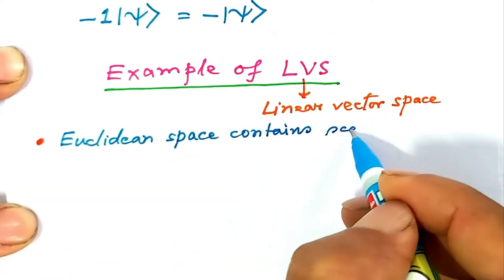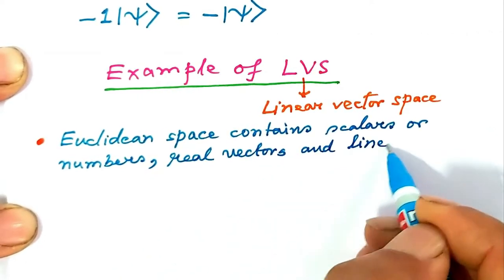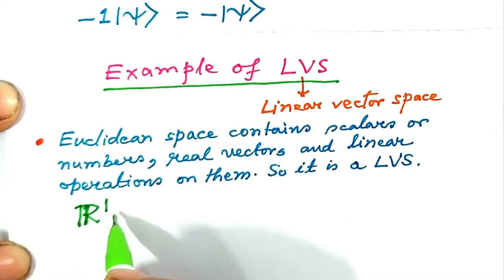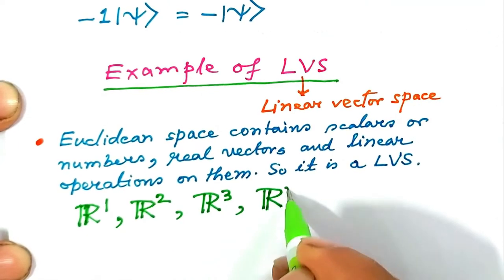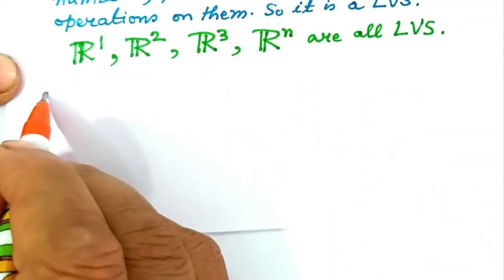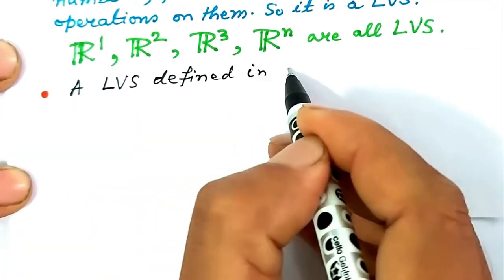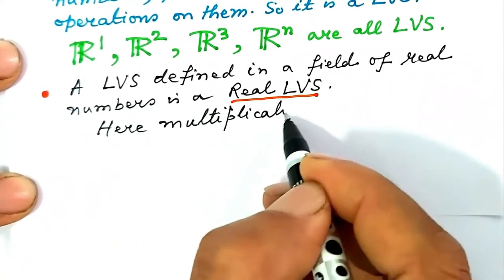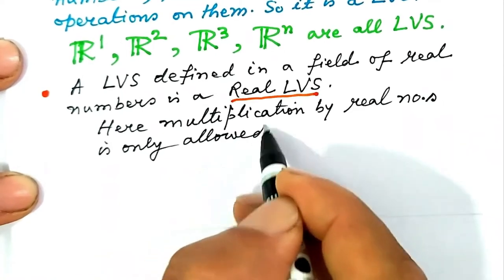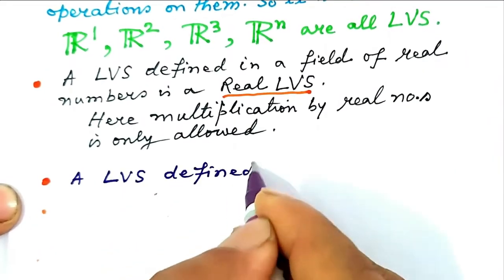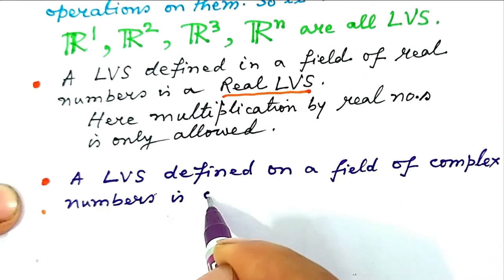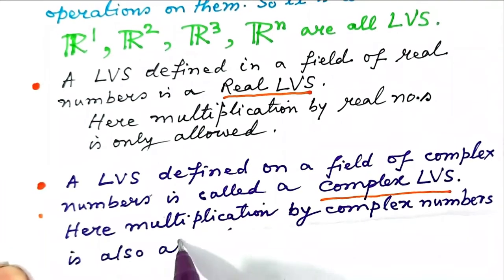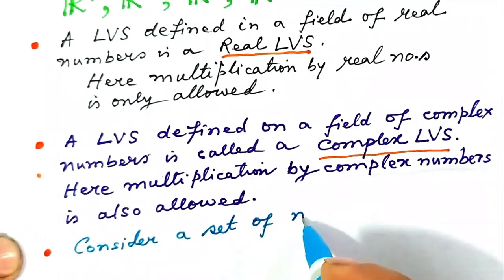An example of a linear vector space: Euclidean space contains scalars, real vectors, and linear operations on them, so it is a linear vector space. Clearly R1, R2, R3, and Rn are all linear vector spaces. A linear vector space defined on a field of real numbers is a real linear vector space — multiplication by real numbers only is allowed. A linear vector space defined on a field of complex numbers is a complex linear vector space — multiplication by complex numbers is also allowed.